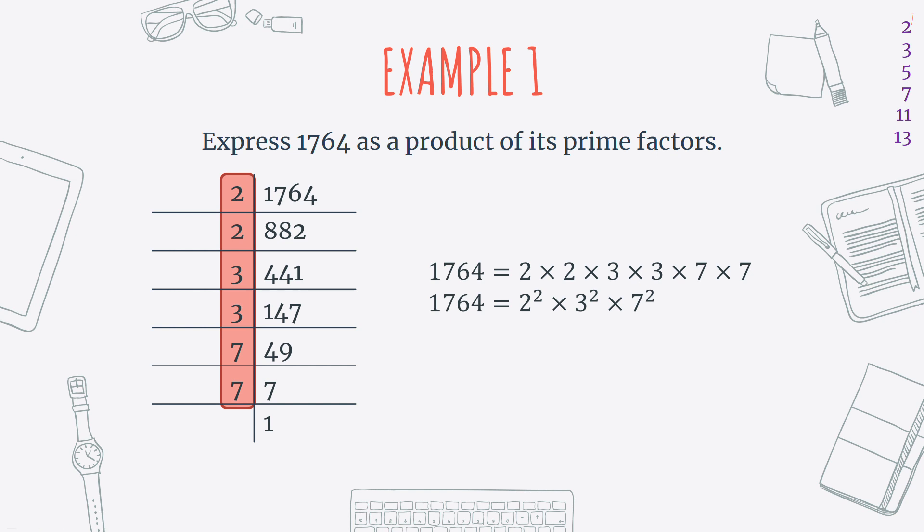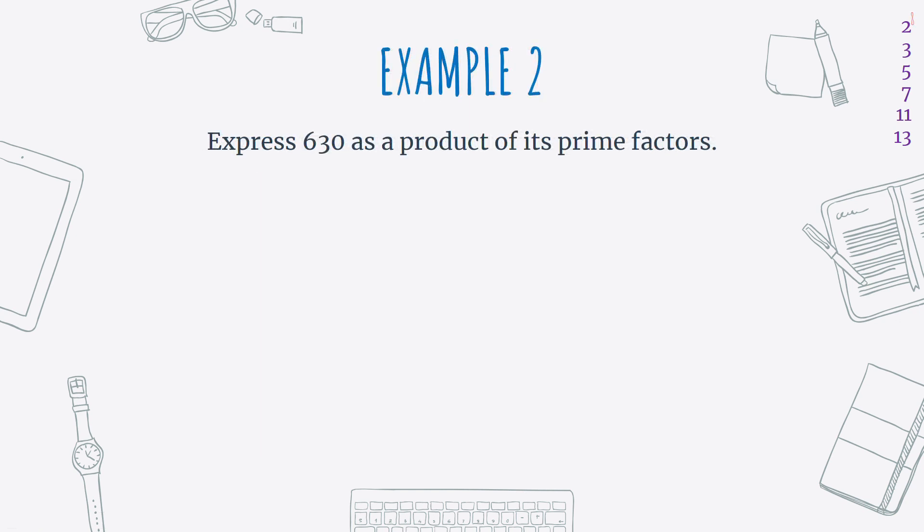Let's do another example. Example number 2. Express 630 as a product of its prime factors. So again, I start with my ladder, and I write 630 in the right-hand top corner. Now I'm going to say, what can I divide 630 by that's a prime number? I can divide it by 2, and I'm going to get 315. Well, I can divide 315 by 3, which is a prime number. So don't try and divide it by something that's not a prime number, that's a composite number. I can divide it by 3, which will give me 105.